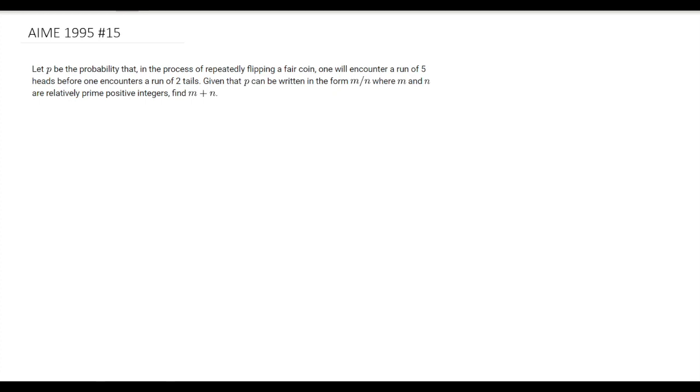This is AIME 1995 problem 15. We want to find the probability that in the process of repeatedly flipping a fair coin, we will encounter a run of five heads before encountering two tails.